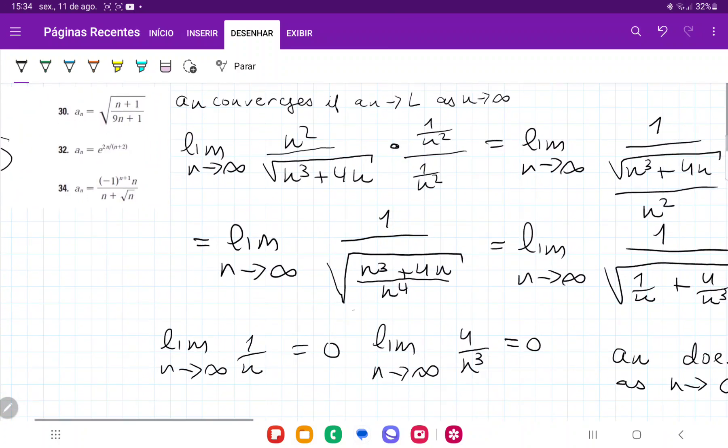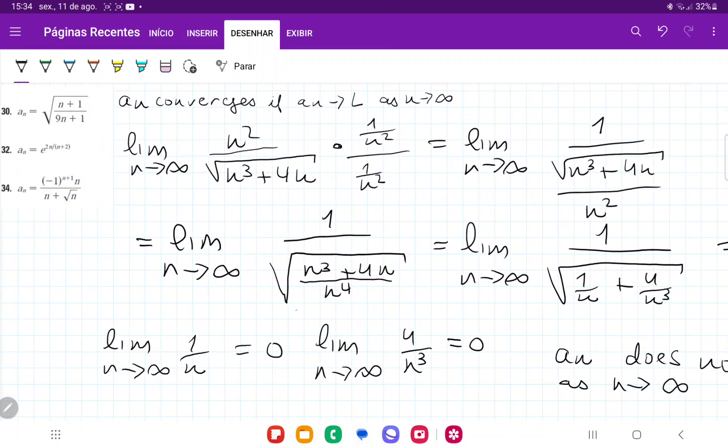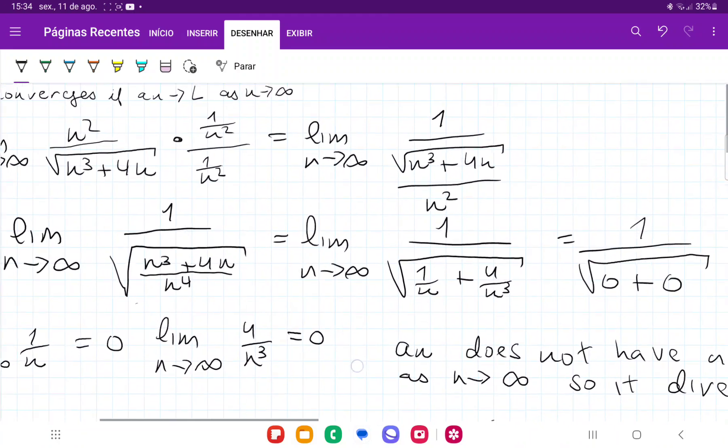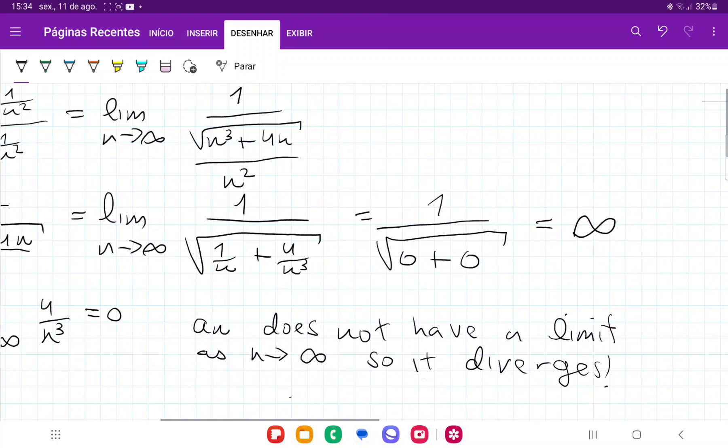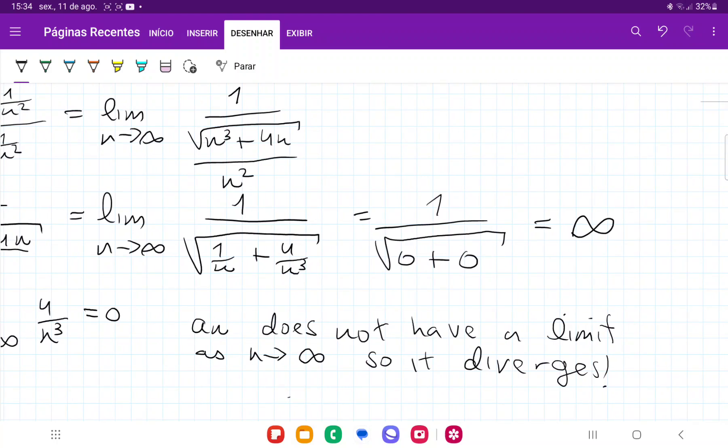And so just to kind of scroll back so you guys can see, all we did was algebraically manipulate it until we get to 1 over n plus 4 over n cubed on the bottom. We divide it by, and then we apply the limit, that's just going to be 1 over 0, and so that tends to infinity.